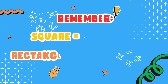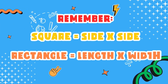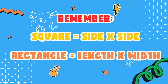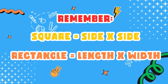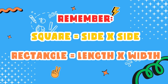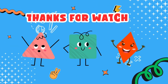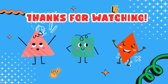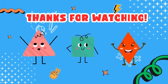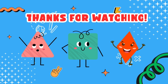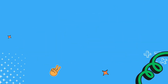Remember, to find the area of a square, multiply side times side. Rectangle, multiply length times width. Awesome job learners! You learned how to find the area of squares and rectangles. Keep practicing and you'll be a geometry genius in no time.